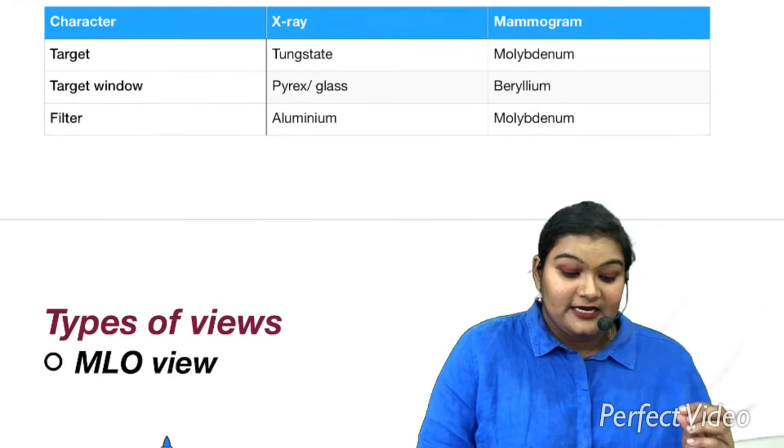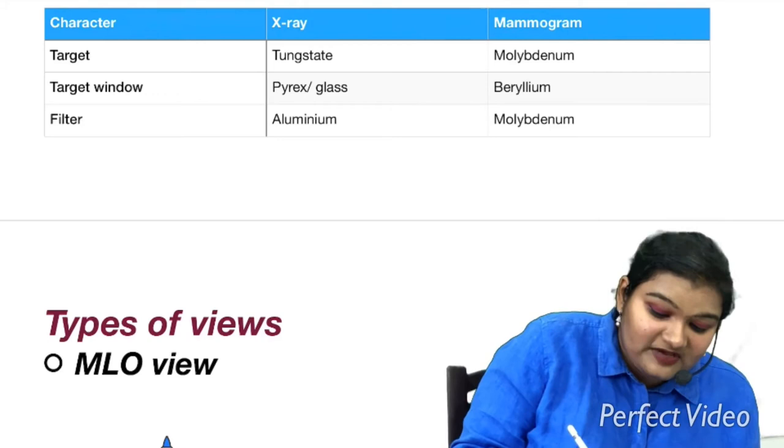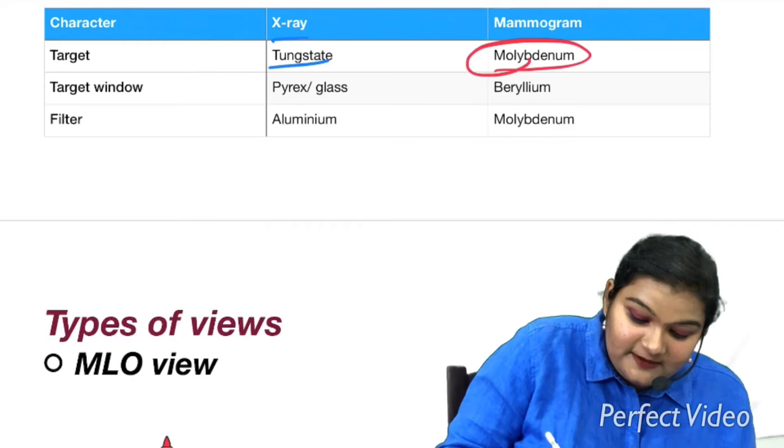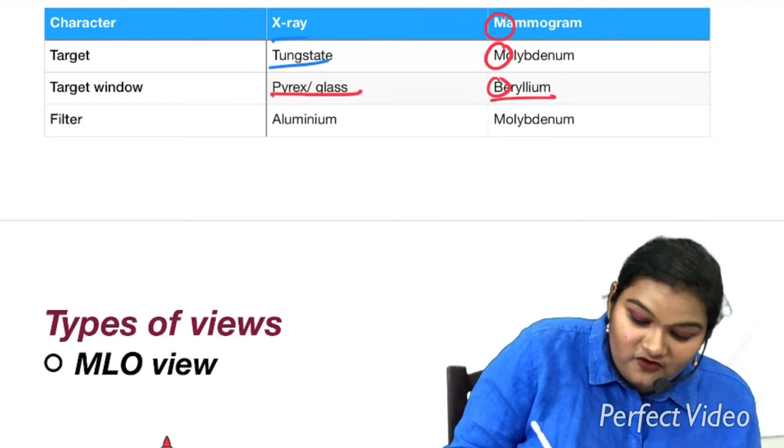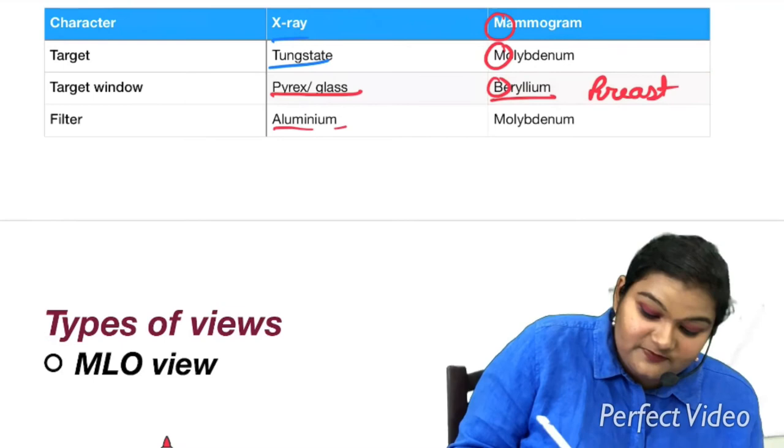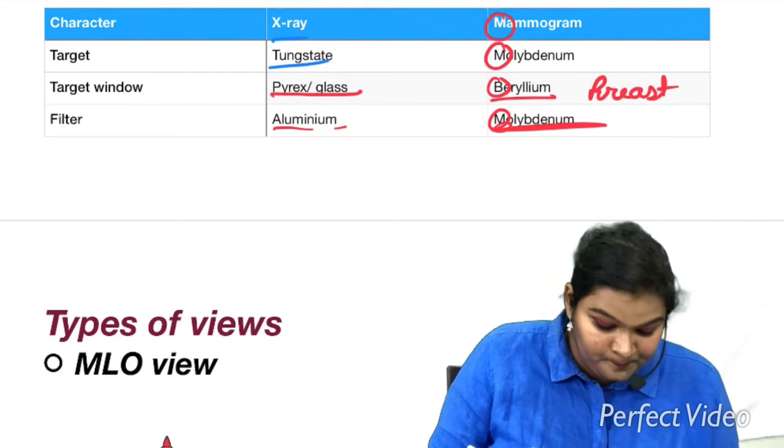Let us see the difference between the mammogram and the x-ray tube. In case of x-ray, the target is of tungsten, whereas it is of molybdenum in mammograph. M for molybdenum and M for mammograph. Now the target window in x-ray is pyrex or glass, whereas in mammogram it is of beryllium. B for beryllium, B for breast. And then the filter. In x-ray, the filter is made up of aluminum, whereas it is made up of molybdenum in mammogram. M for molybdenum, M for mammogram.